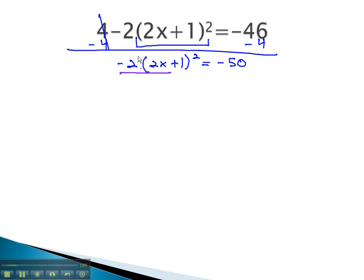So, to get rid of the negative 2 another way, we must divide both sides by negative 2. We're left with (2x+1)² = 25.